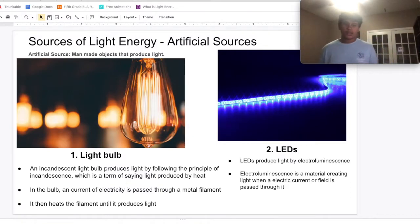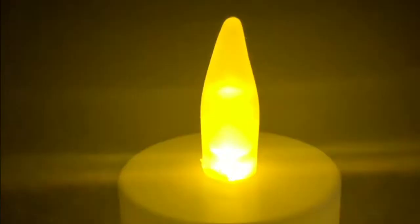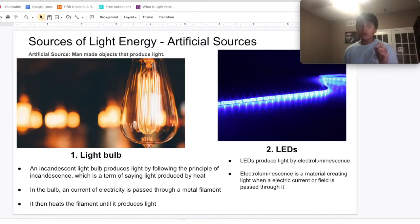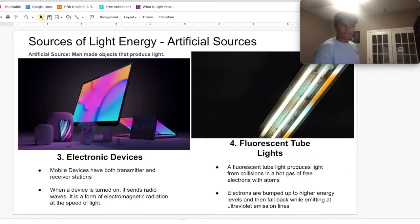Now to LEDs. This is the example of an LED. Electroluminescence is what produces light in LEDs. Here are some more examples of artificial sources of light, which you can pause and read.